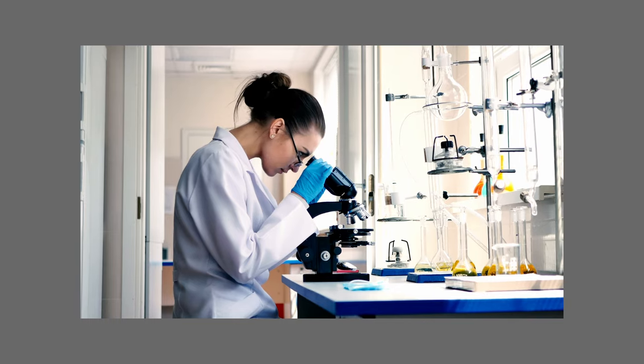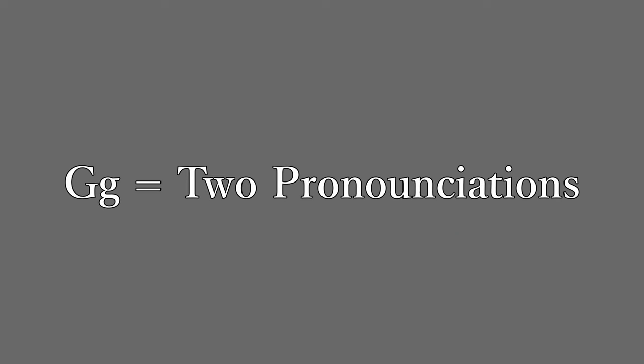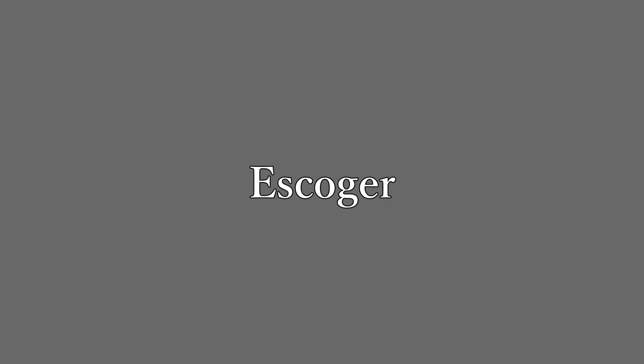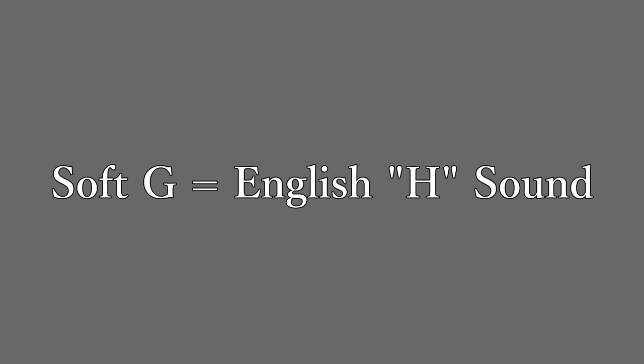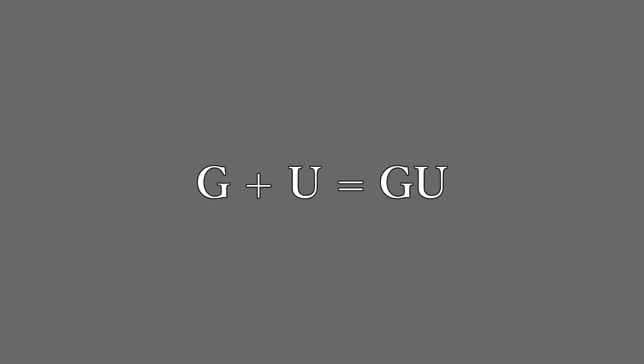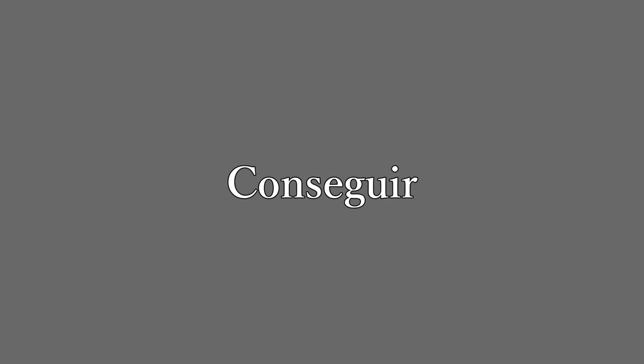So let's go through each letter individually. Going in order, we have A, B, C, D, E, F, G. Let's stop here for a second. The letter G in Spanish can be pronounced in two different ways. For example, the verb escoger, meaning to choose, is pronounced with a soft G. But if you add a U in front of that G, followed by an E or an I, then it will be pronounced with a hard G, like in the verb conseguir, meaning 'to get' in English. Let's continue.